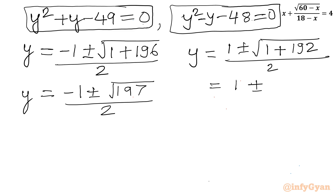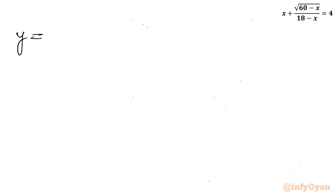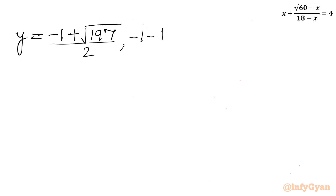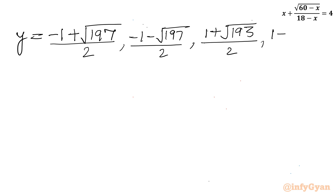For the second quadratic, y equals (1 plus or minus square root of (1 plus 192)) over 2, giving y equals (1 plus or minus square root 193) over 2. Writing all four values: y equals (minus 1 plus √197)/2, (minus 1 minus √197)/2, (1 plus √193)/2, and (1 minus √193)/2.